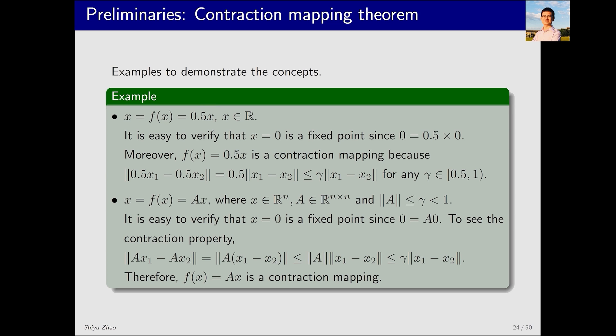Similarly, we can generalize this to when x is a vector and A is a matrix. When the matrix norm of A is less than 1, 0 is still a fixed point. And Ax is also a contractive mapping according to the inequality.